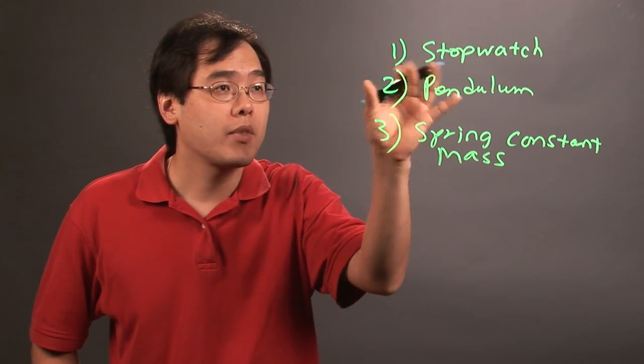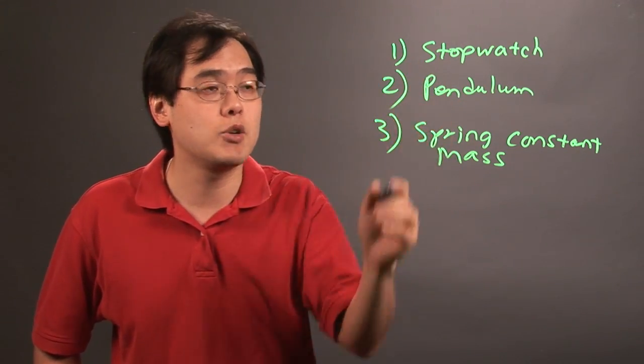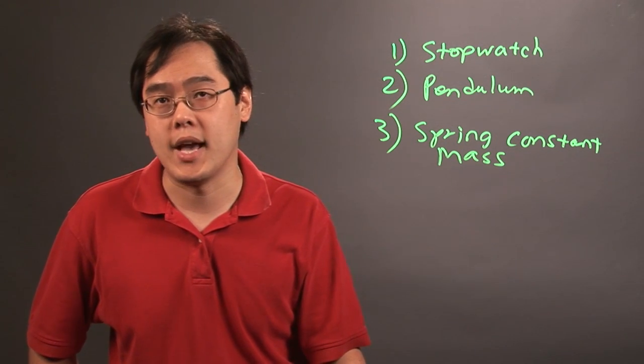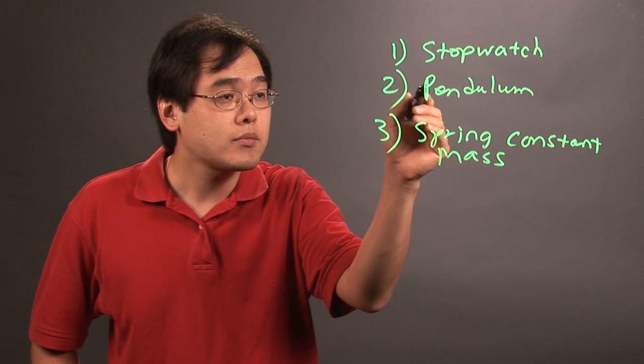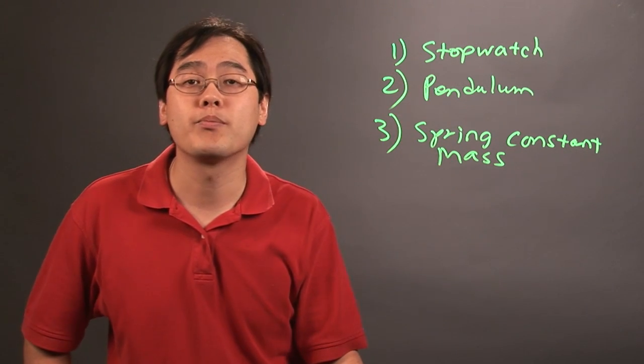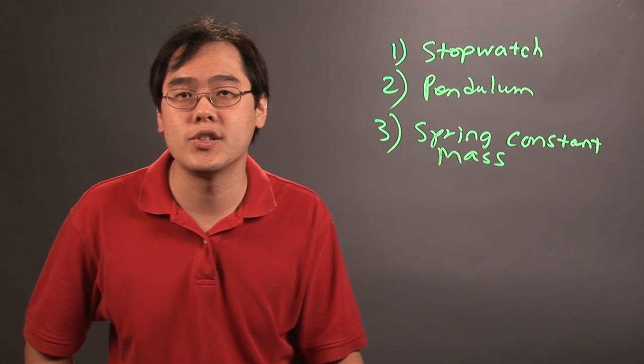Depending on the kind of approach you want to take, use a stopwatch, if you have a pendulum to work with measure the length of it, or you can find the spring constant and the mass of the object and then go from there. All of these approaches involve making the appropriate calculations in each scenario. So I'm Jimmy Chang and there are a few approaches on how to calculate the number of oscillations. I'll see you next time.